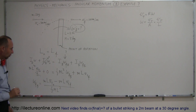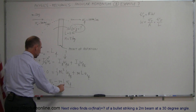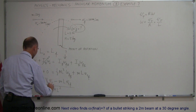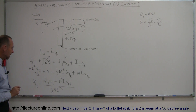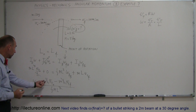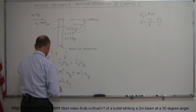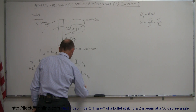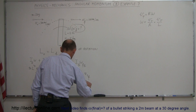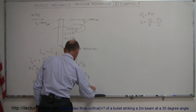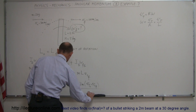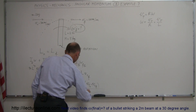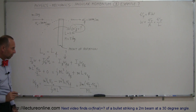Notice we have an L in each numerator term and an L squared in the denominator, so one L cancels, leaving one L. We can factor out the bullet mass M and bring the 3 to the top, giving: omega-final of the beam equals 3 times the mass of the bullet times (V-tangential-initial minus V-tangential-final), all divided by the mass of the beam times the length of the beam.